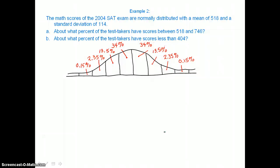About what percent of the test takers have scores between 518 and 746? Well, to determine this, we're going to have to label our areas. We know that the mean is given as 518, so that goes in the center. And then moving to the right,